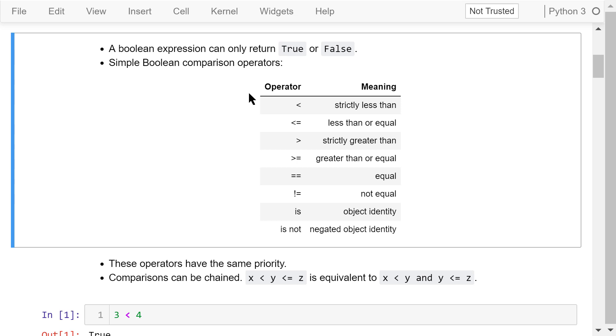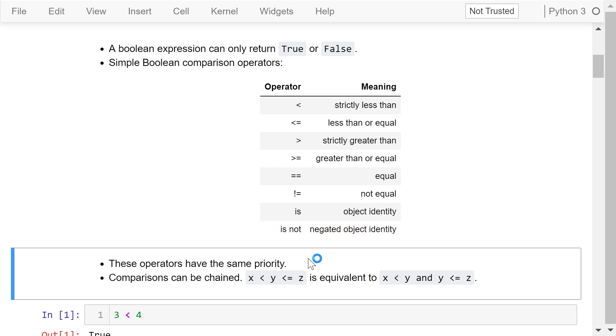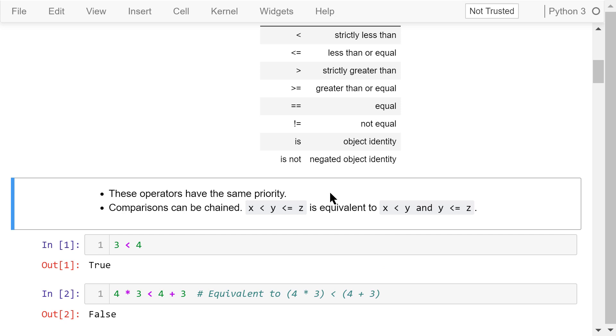Simple Boolean expressions compare two values using these operators. The first four operators are very easy to understand. Notice the use of double equals for equality check. A common mistake is using a single equal when you should use double equals in conditions. Python uses single equal to indicate assignment. Exclamation equal means not equal in Python. The keyword is is used to check if one object is another. Is not is used to check if one object is not another.